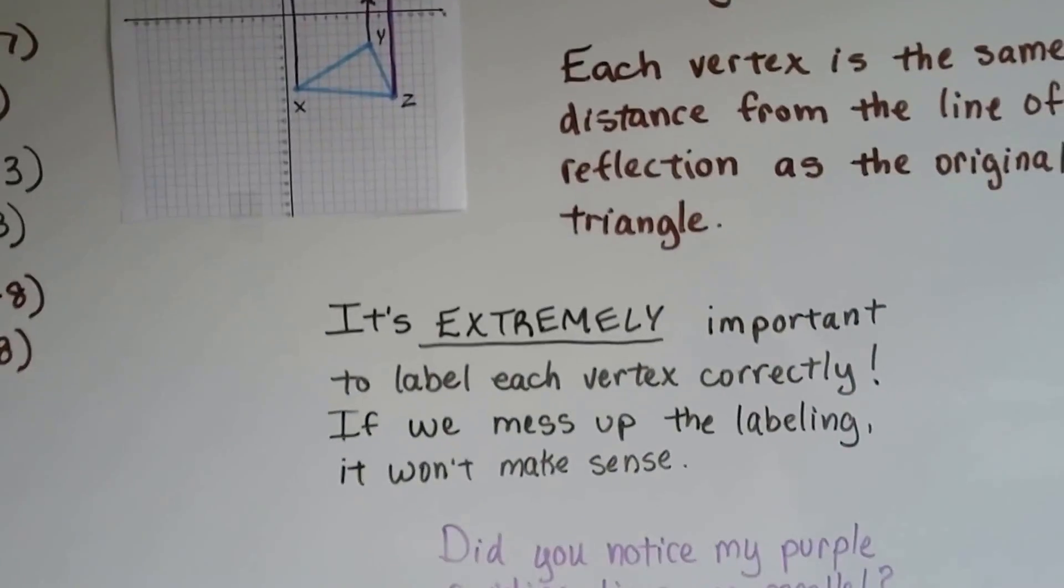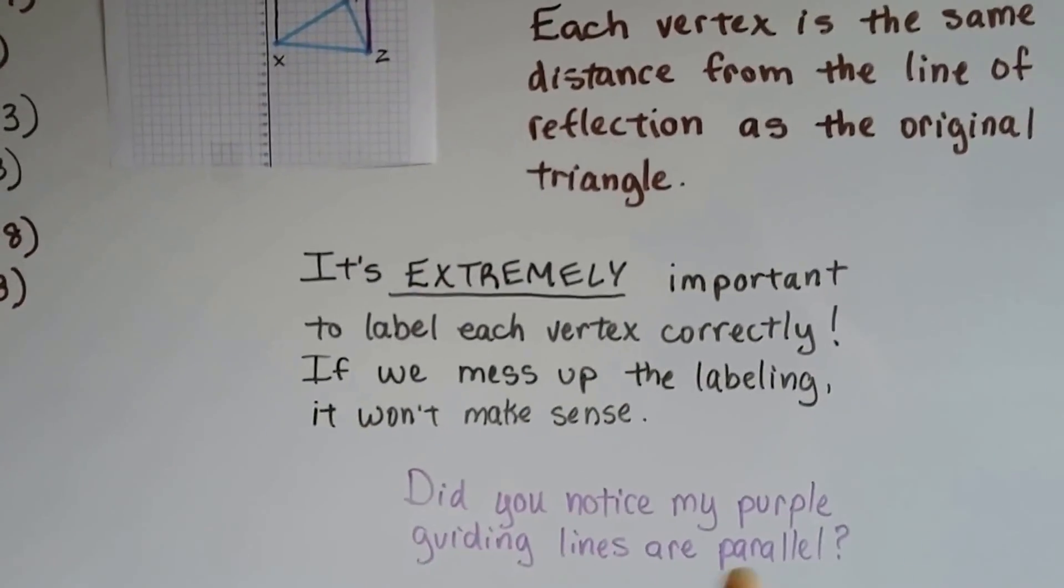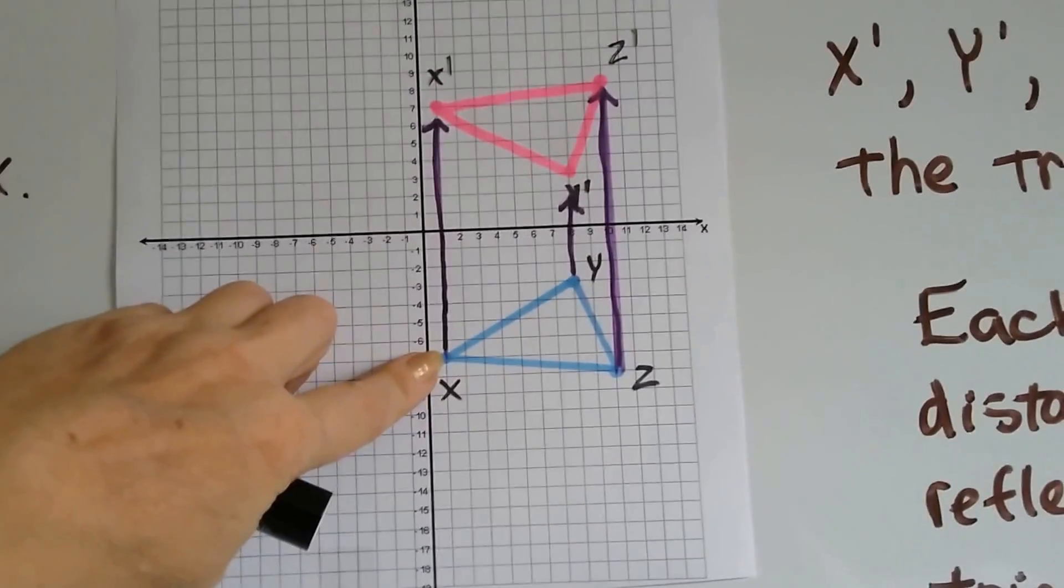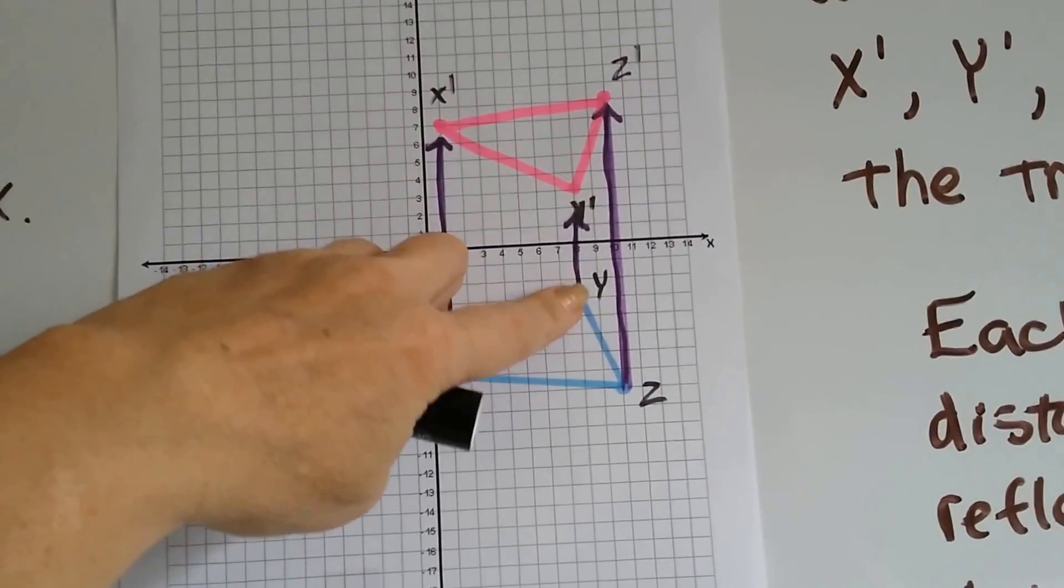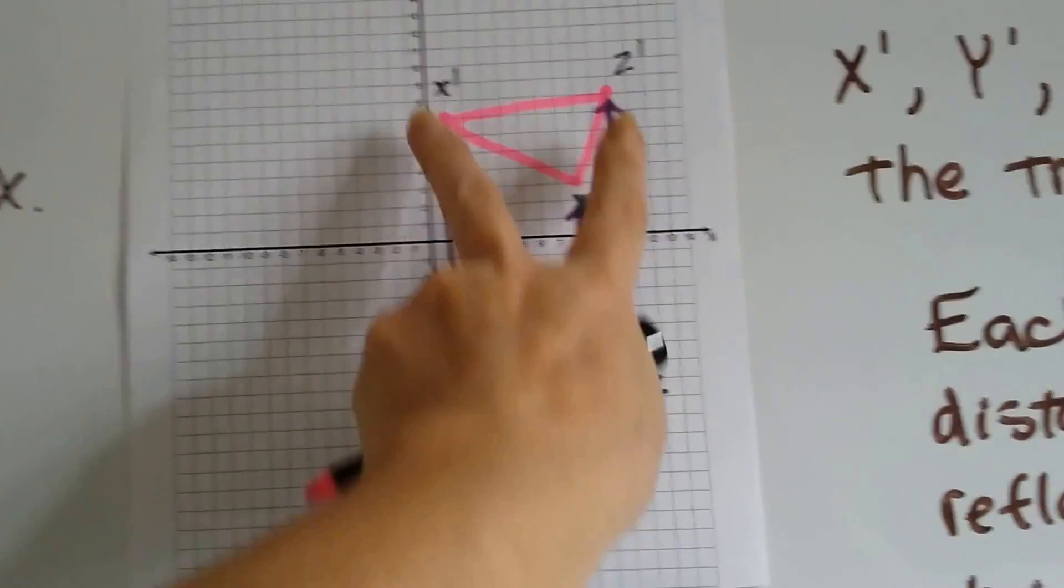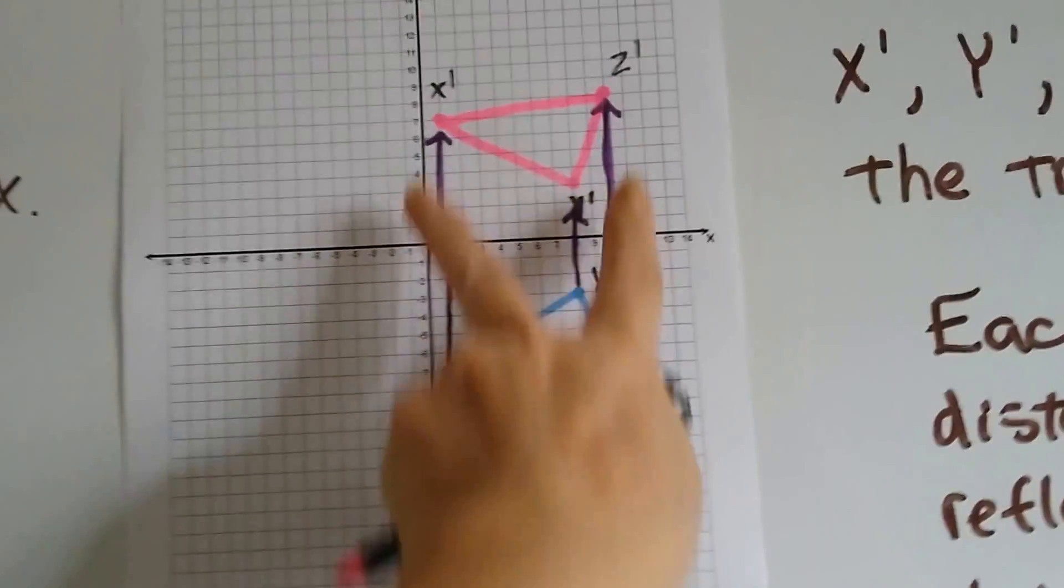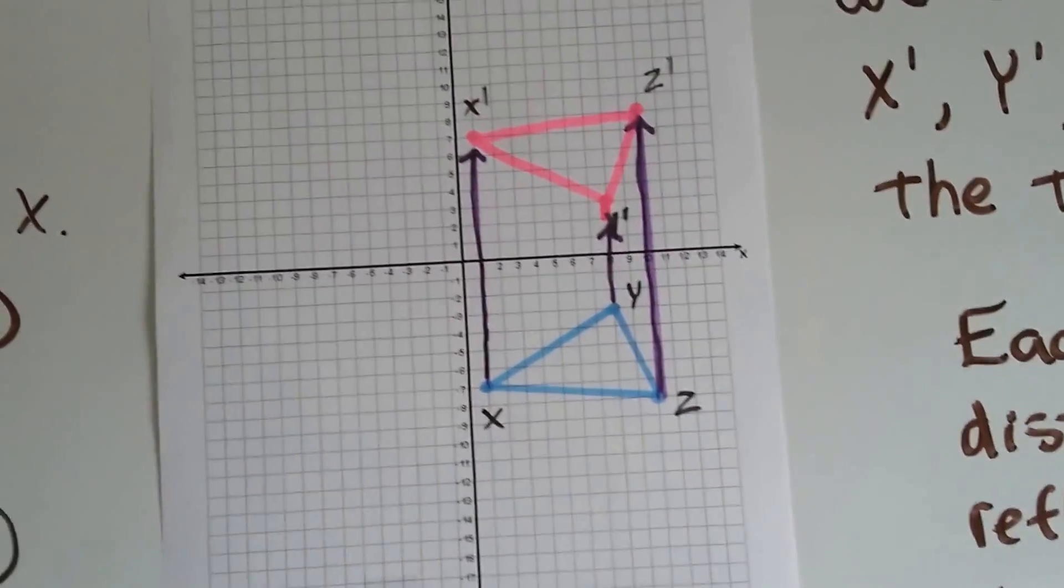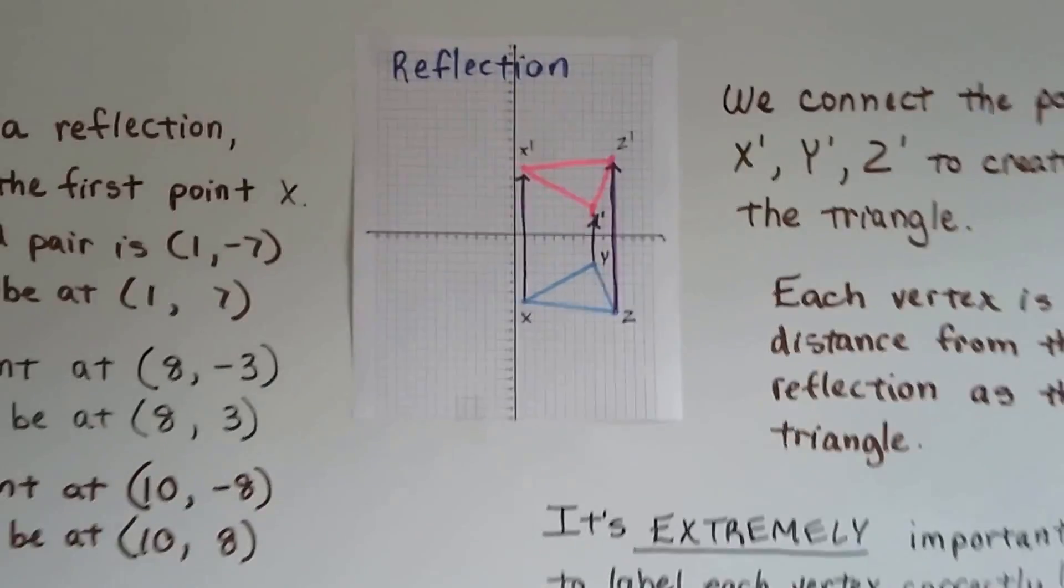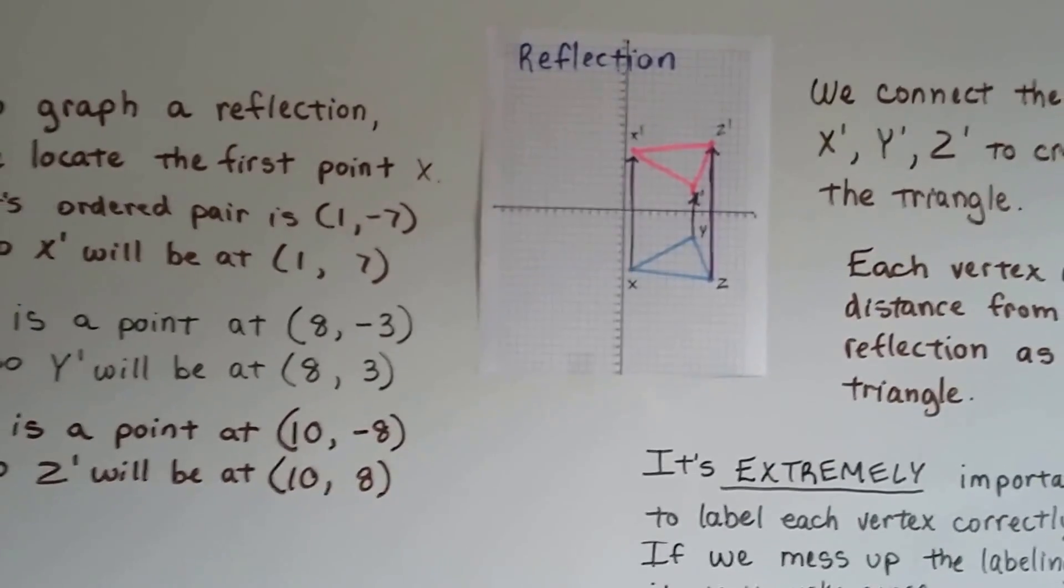Now did you notice my purple guiding lines are parallel? Look at these purple guiding lines that I drew to get from x to x prime, and to get to y to y prime and z to z prime. They're parallel. And they kind of make a 3D image, don't they? It kind of makes it look like a triangular prism.